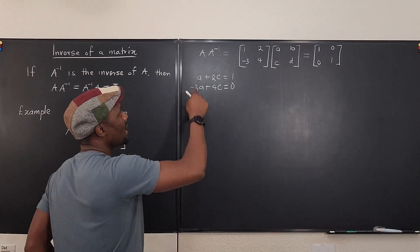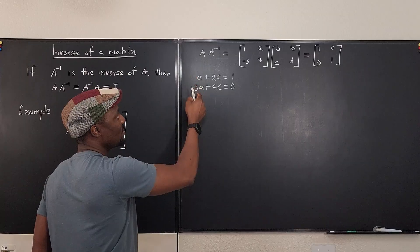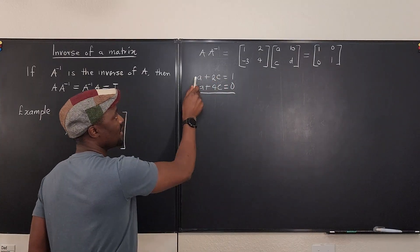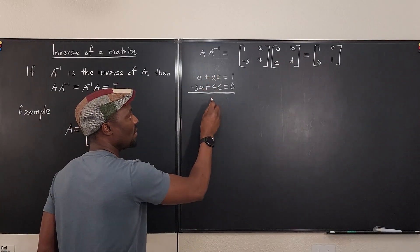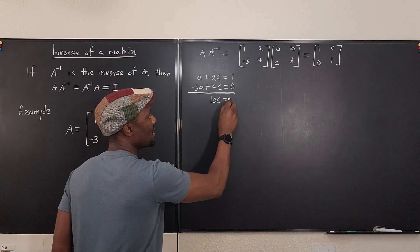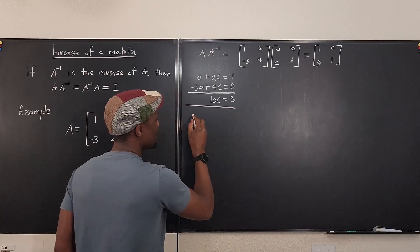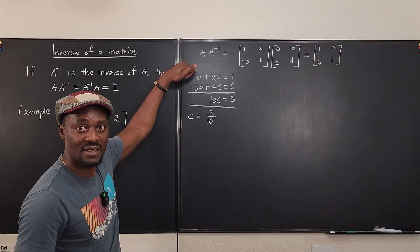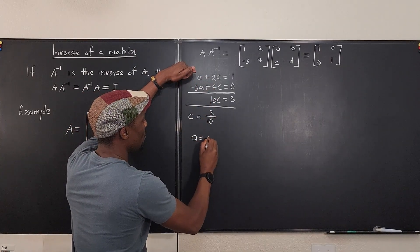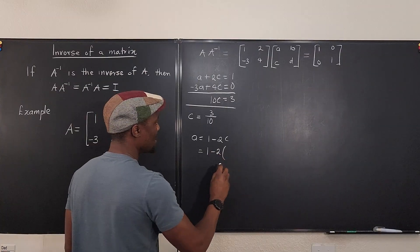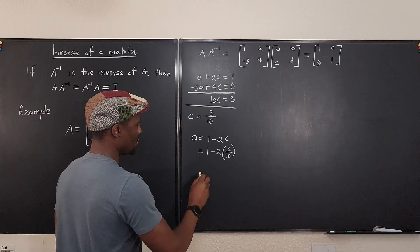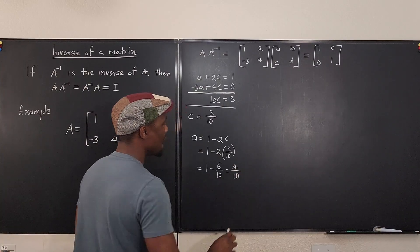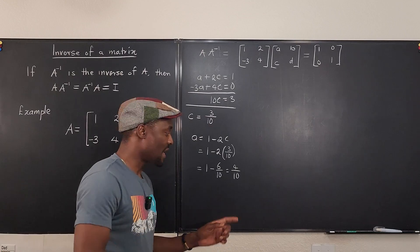To solve: multiply equation one by 3, giving 3a and minus 3a, which cancel to zero. Then 6c plus 4c gives 10c, and 3 plus 0 gives 3. So c equals 3 over 10. From the first equation, a equals 1 minus 2c, which is 1 minus 2 times 3/10, giving 1 minus 6/10, which equals 4 over 10.